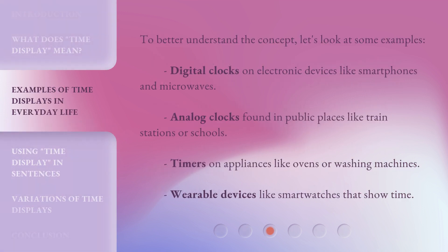To better understand the concept, let's look at some examples. Digital clocks on electronic devices like smartphones and microwaves. Analog clocks found in public places like train stations or schools. Timers on appliances like ovens or washing machines. Wearable devices like smartwatches that show time.